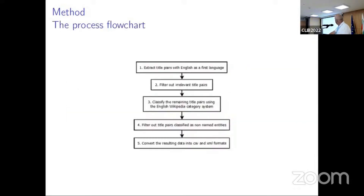This is the flowchart. First, parallel titles are extracted with English as the first language. Then irrelevant title pairs are filtered out. Next, the remaining title pairs are classified using the English Wikipedia category system. Then title pairs classified as non-named entities are filtered out. Finally, the resulting data is converted into CSV and XML formats.